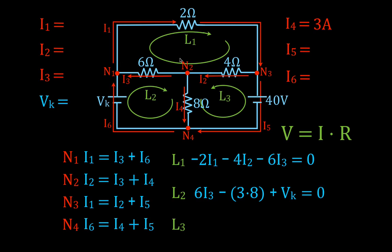We're going to do the same thing for loop three, starting upper left and going counterclockwise. We know this is 3 and this is 8, so we put minus 3 times 8 again. We go across the 40-volt source from negative to positive — that's a positive voltage gain of plus 40. And we go across the 4-ohm resistor, giving us minus 4I2. That's all our current rules and voltage rules set up. Now I can solve the problem.